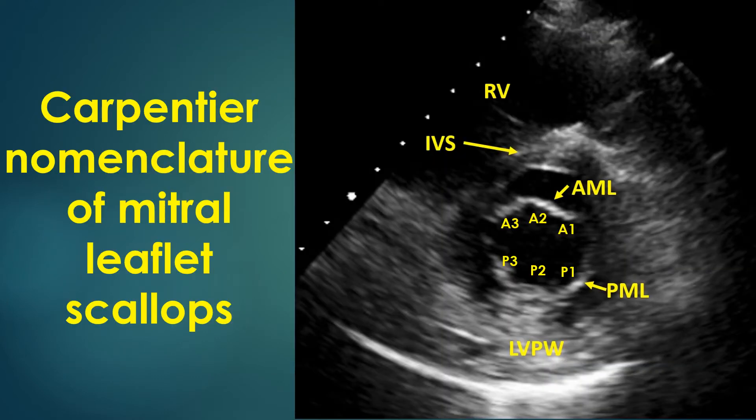Normal mitral valve in parasternal short axis view: RV — right ventricle, IVS — interventricular septum, AML — anterior mitral leaflet, PML — posterior mitral leaflet, LVPW — left ventricular posterior wall.